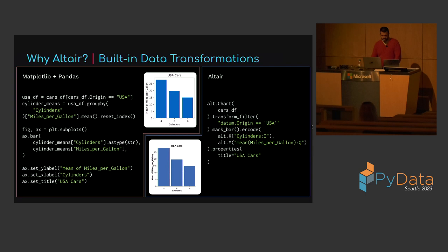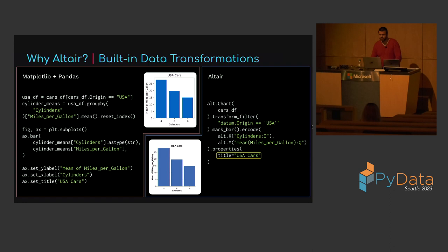Here's how the same chart can be created with Altair. We'll wrap the cars dataframe in an Altair chart and then use the transform_filter method to keep only those rows with origin USA. Then create a bar mark and encode cylinders as the x position, and for y use the expression mean miles per gallon. By incorporating data transformations into the chart specification this way, we remove the duplication and can quickly edit columns while keeping everything consistent. Altair also automatically labels the y-axis with the aggregation used — in this case the mean.